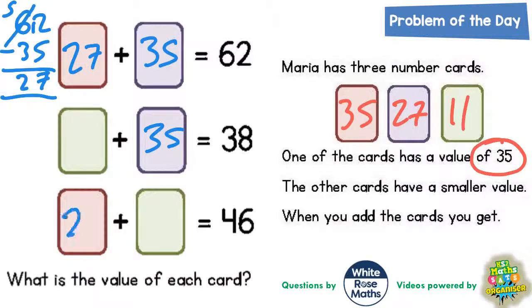So that means this red one would be 27 as well. And then 27 add 46. Well if you take 27 off 46, 6 take away 7 you can't do, so borrow.